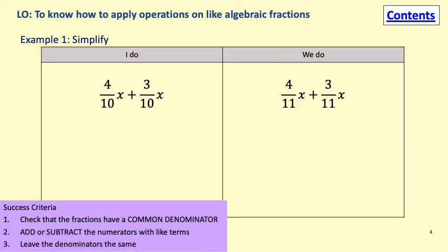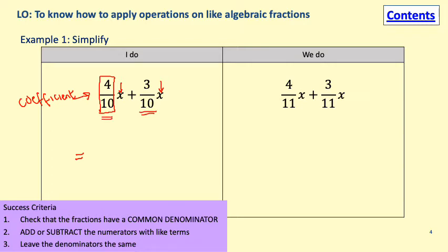Now we'll start with some easy ones. The coefficient is the number that comes before our variable — it tells you how many of the variable we have. Our variables are both x's, so just like if they were both c for cars, we can just add them together. We add our coefficients: 4 over 10 add 3 over 10. Our denominators are both the same, so all we have to do is add our numerators. We get 7 over 10 lots of x — 7 tenths of x.